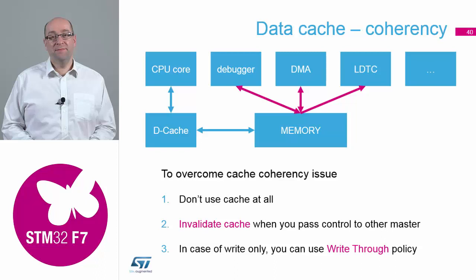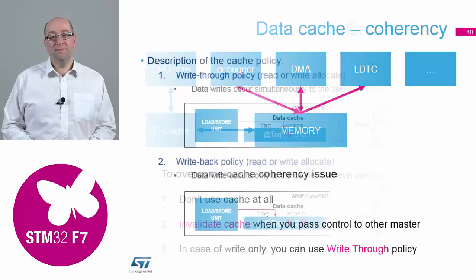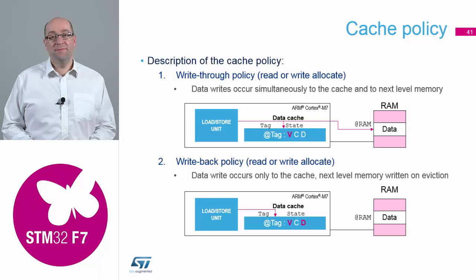So when you move to the DMA to do something, you can say scrap whatever's in the cache. Again, potentially you're losing the benefits of the cache. Or you can start using cache policies. There are a couple of policies that we have to help you manage how you work with the cache.